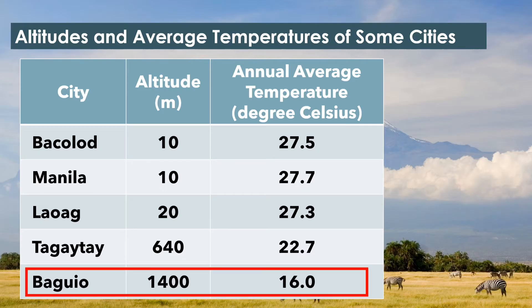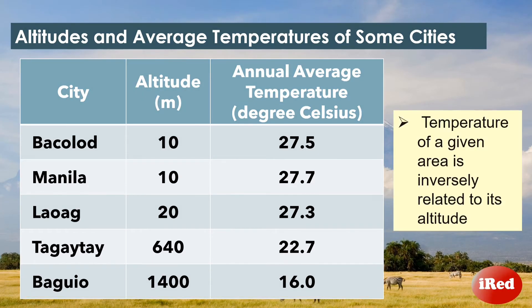Whereas Baguio, which has the highest altitude of 1,400 meters above sea level, is the coldest among the given cities with an annual average temperature of 16 degrees Celsius. Based on the given data, we can observe that the annual average temperature of a given area is inversely related to its altitude.